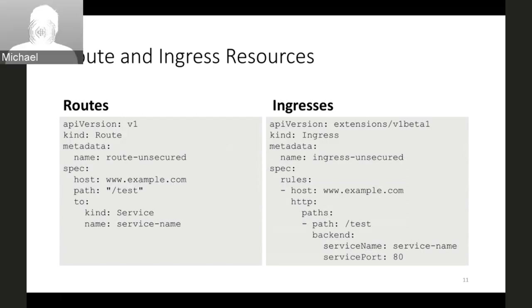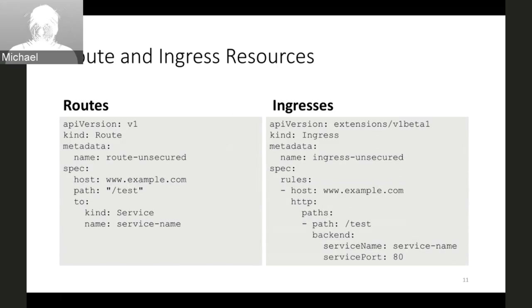Here we can see on screen a route and an Ingress resource for the same load balancing requirements. We have an application with hostname www.example.com and one path-based rule: requests with a URL starting with 'test' should be load balanced to the service named 'service name.' As you can see, the route resource and the Ingress resource for those requirements are very similar.